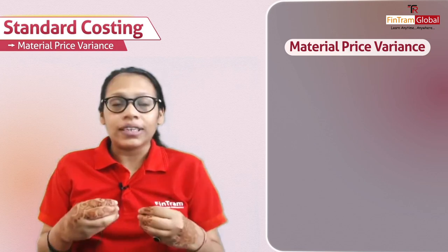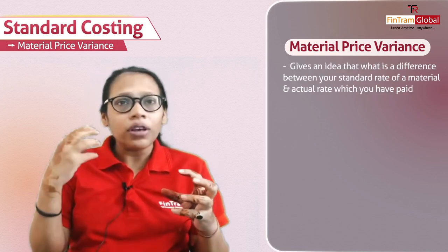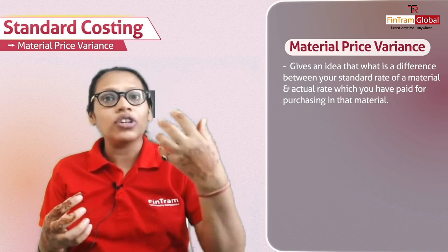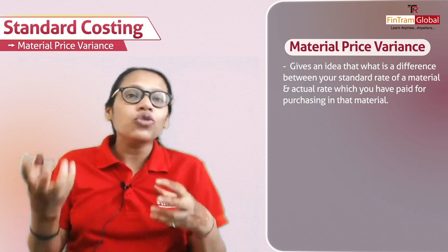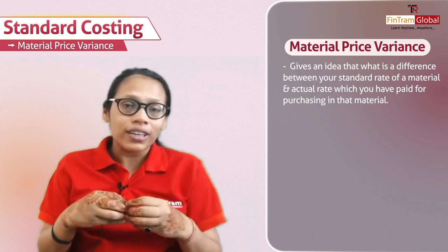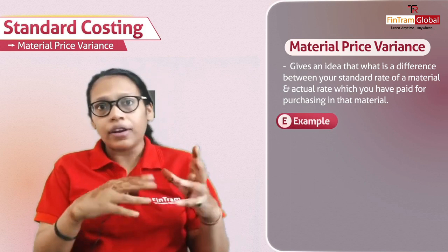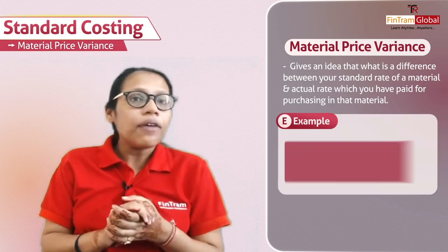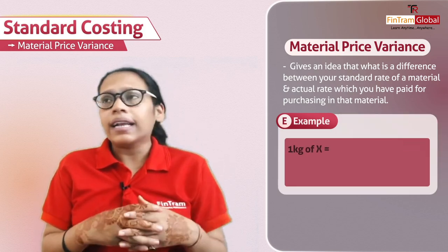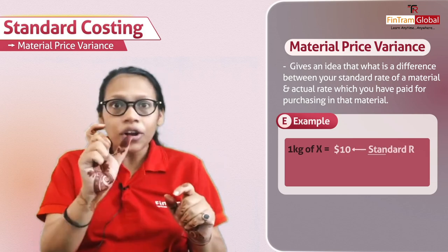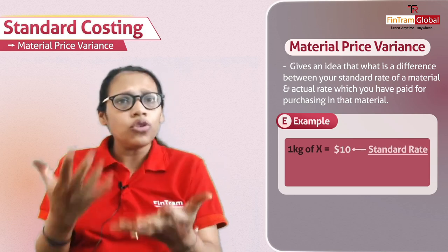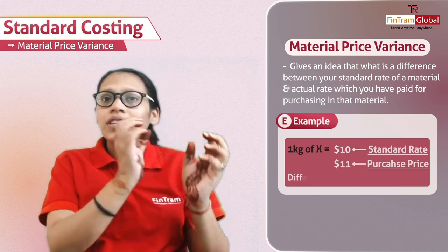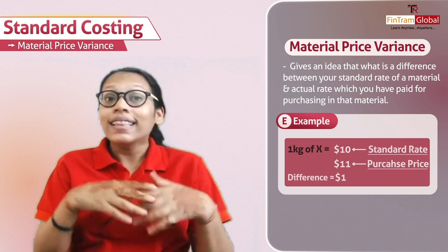Material price variance gives an idea of what is the difference between your standard rate for purchasing a material and your actual rate which you have paid. For example, suppose your standard rate is ten dollars per kg of raw material X, and the actual purchase price comes up at eleven dollars — that one dollar difference is the variance.